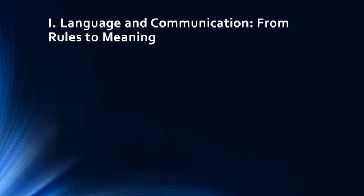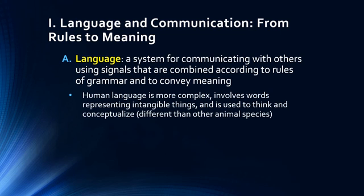Let's start with basic language properties. Language is any system for communicating with others using signals that are combined according to rules of grammar and to contain meaning. There are of course a myriad number of different kinds of languages — spoken languages, written languages, spoken and written languages, and of course gestural languages like American Sign Language.